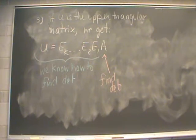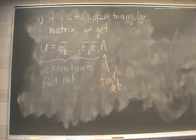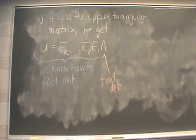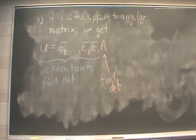So if U is the upper triangular matrix that we get, we're going to end up with an equation that looks like this. After K elementary row operations, each represented by one of the elementary matrices, we get A times E1 times E2 all the way to EK is equal to our upper triangular matrix. We know how to find the determinant of all of these elementary matrices as well as this upper triangular matrix, and we're going to use that information to help us find the determinant of our original matrix A.